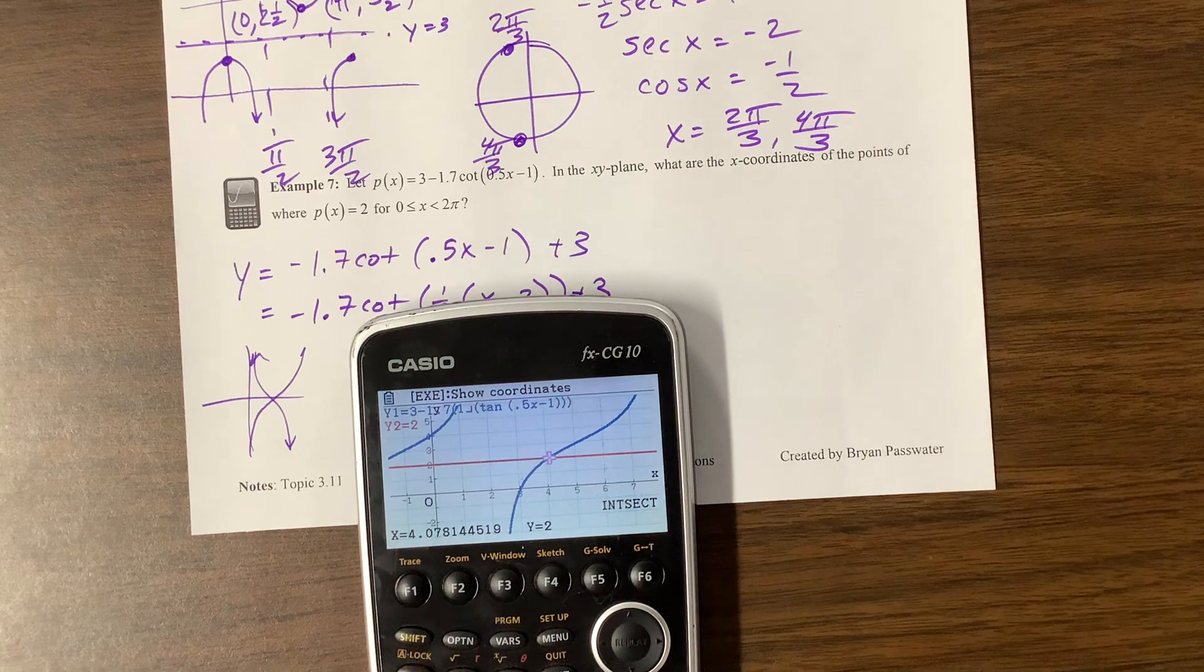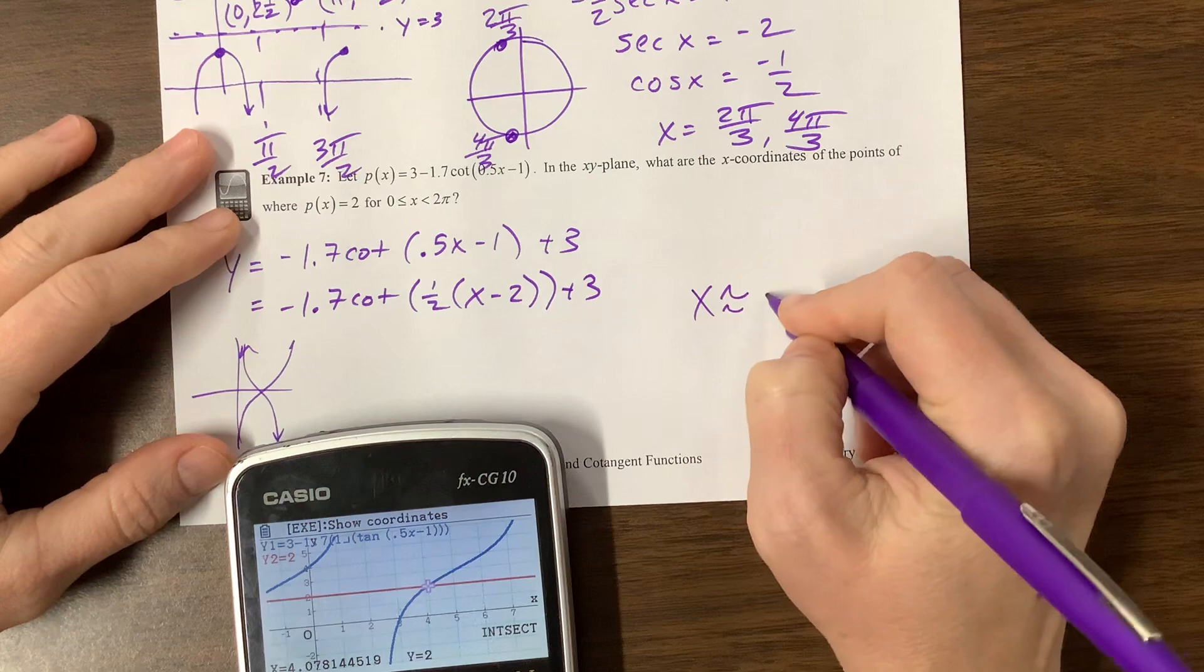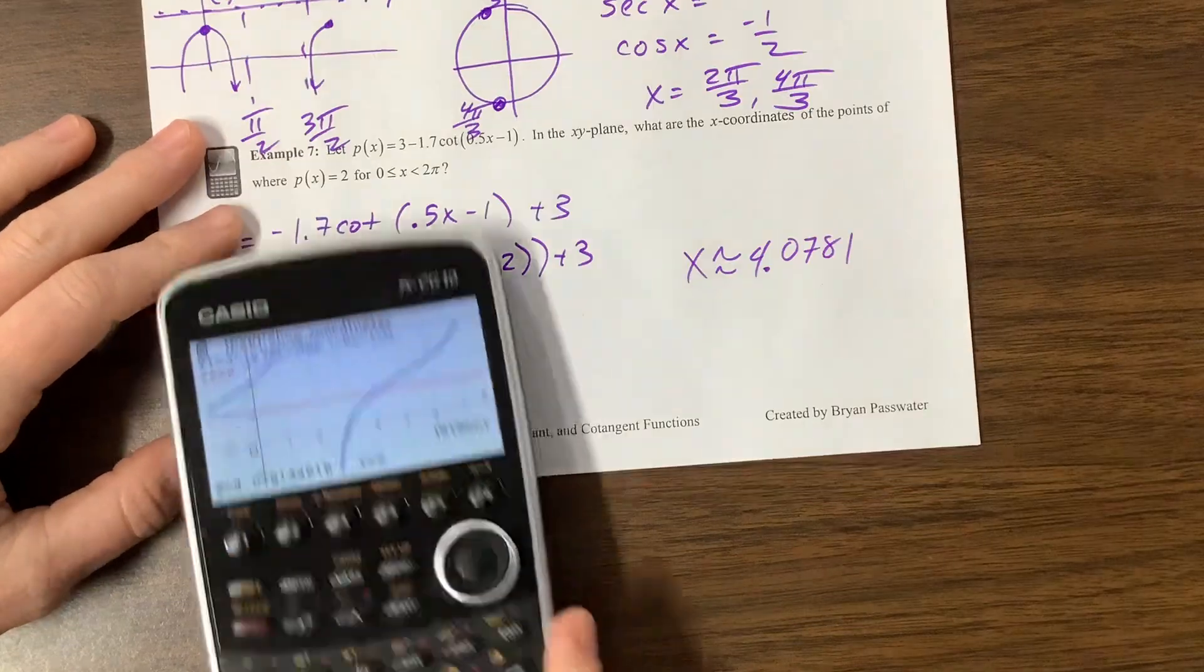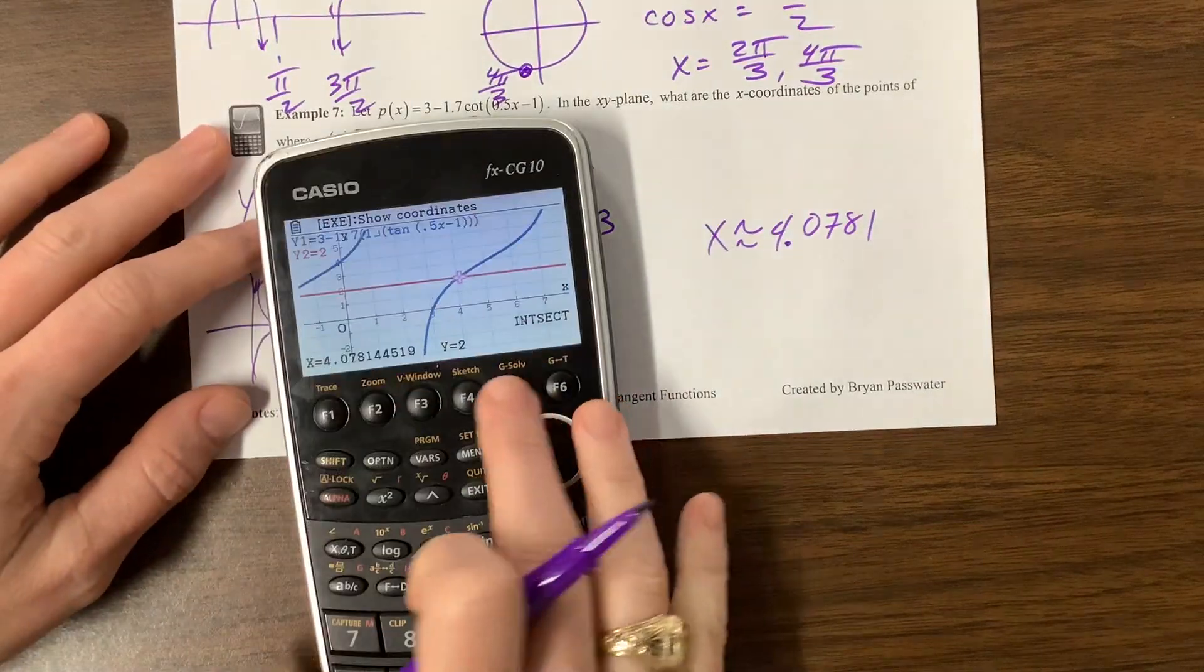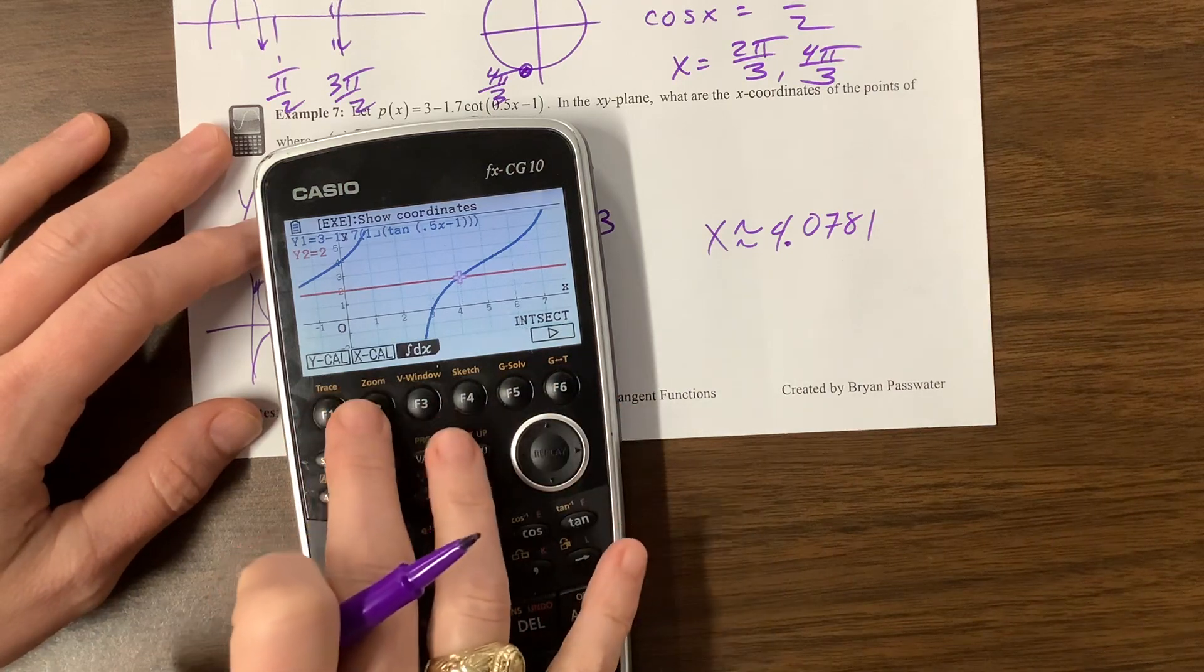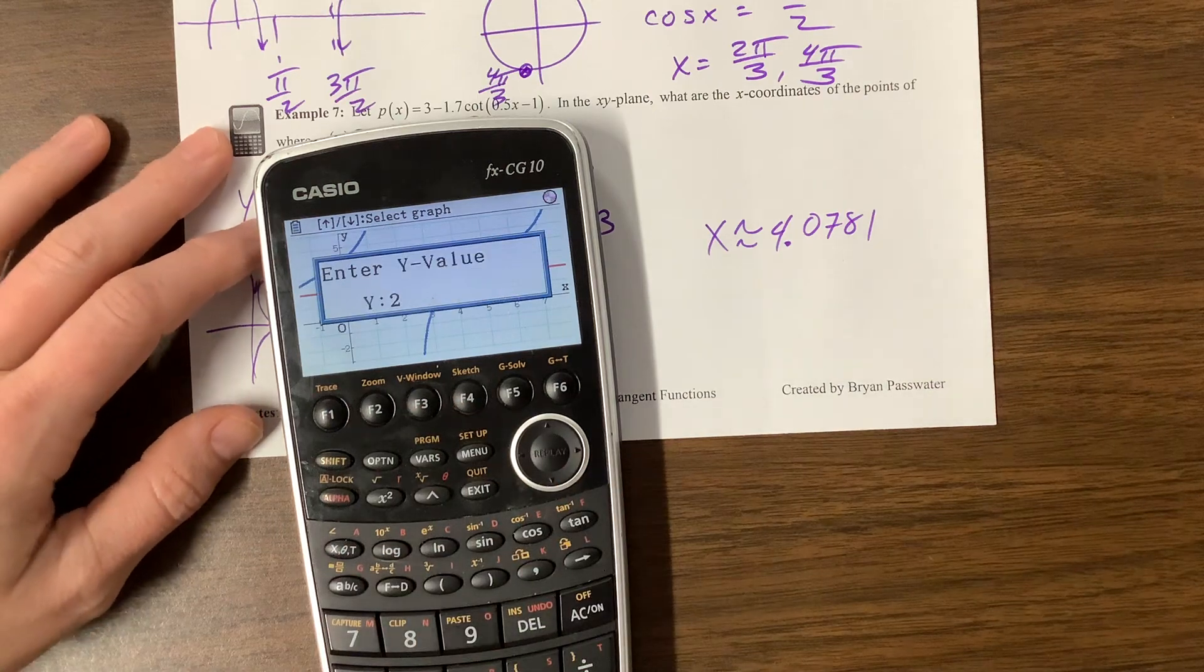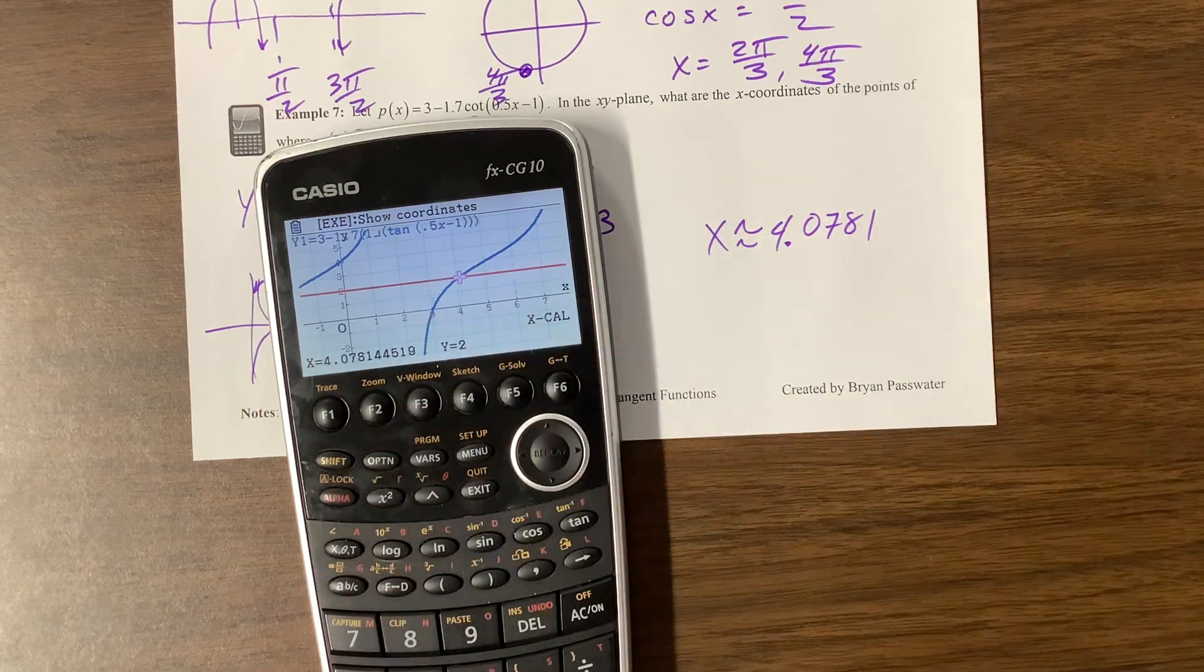4.07814 dot dot dot. So what's the x-coordinate x is about 4.0781. Interesting. Or the other option on this calculator, you can do g-solve, and then you can come over and do x-cal. So it'll calculate the x-value of this curve when the y-value equals 2, but that wasn't always something easy for us to do, so I'm used to doing the intersection.